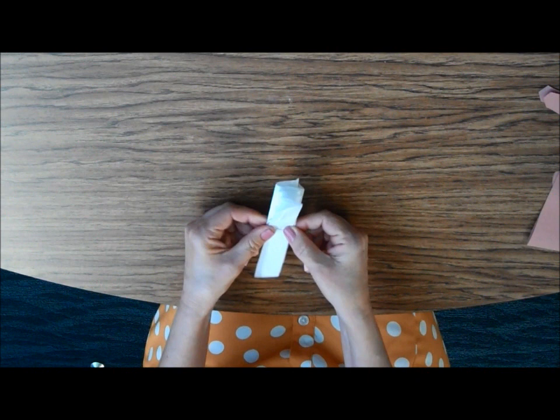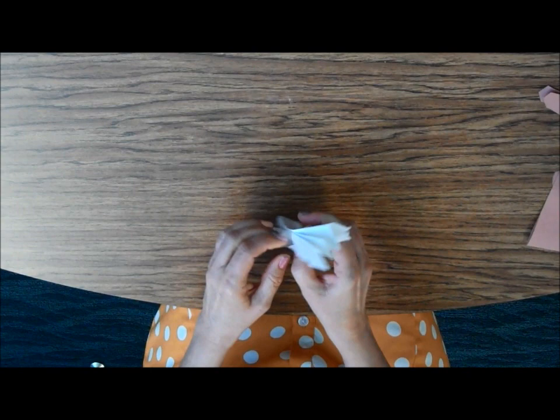Now if you don't have a stapler, you could put a twist tie. You just need something in the middle. You could tie a string. You could put tape, and it needs to be attached in the middle. Now all you're going to do is fluff it.